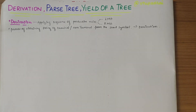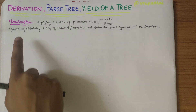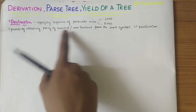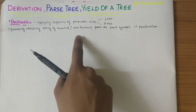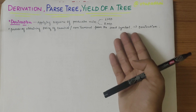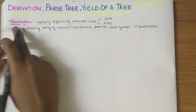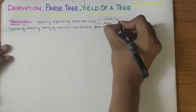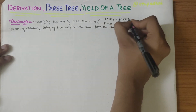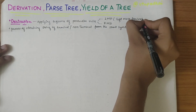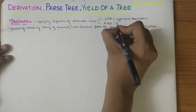In this video we'll be looking into derivation and we'll learn about LMD and RMD. Derivation is basically applying a sequence of production rules to get the LMD or RMD. It is the process of obtaining strings comprising of terminals or non-terminals from the start symbol. It is further classified into LMD (Leftmost Derivation) and RMD (Rightmost Derivation).